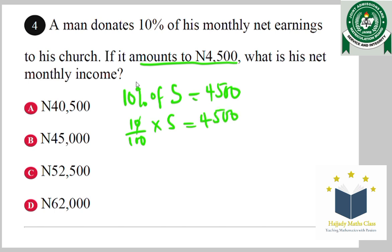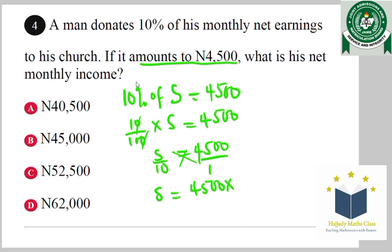Cancel the zeros — we have S over 10 equals 4,500. The next thing is to cross multiply. So S equals 4,500 multiplied by 10, which is S equals 45,000. So this is the total salary he earns, and our answer is B.